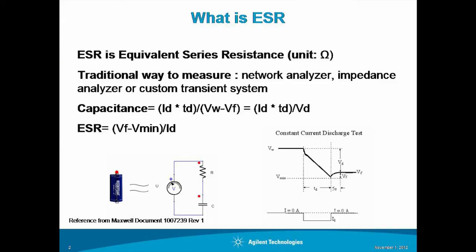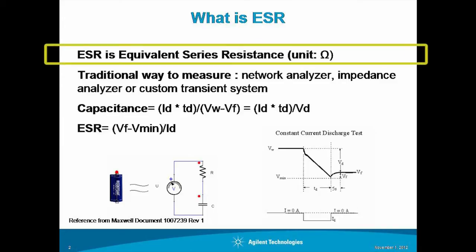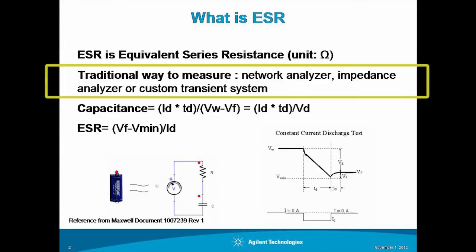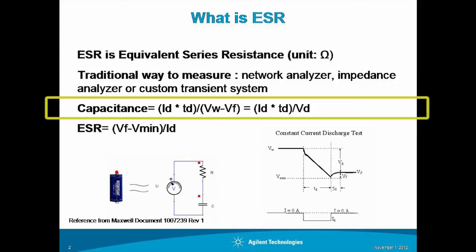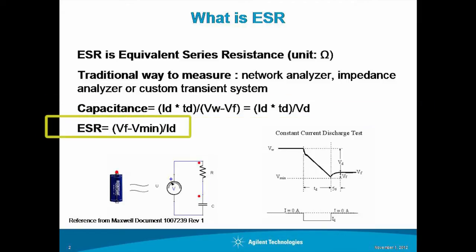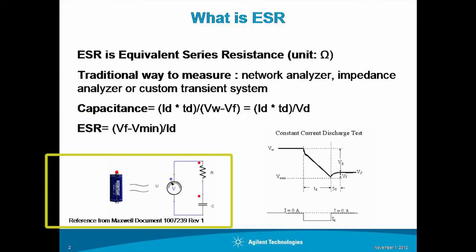So what is ESR? ESR is an equivalent series resistance. Traditionally, in order to make ESR measurements you have to utilize network analyzers, which is fairly expensive equipment, or an impedance analyzer, or even a custom transient solution. Capacitance is defined from this specific vendor — Maxwell — based on a specific equation. ESR measurement is also supplied by them, and it's very critical to understand because the traditional model of a capacitor consists of a resistance and the capacitance. These two components are very important for ultra capacitance analysis.